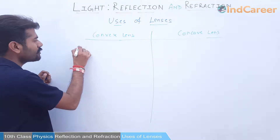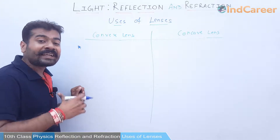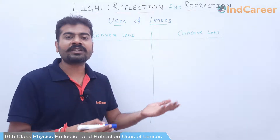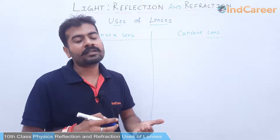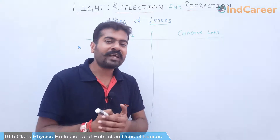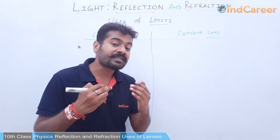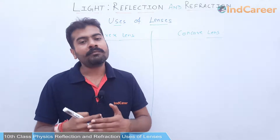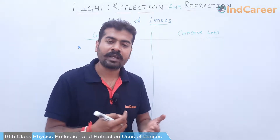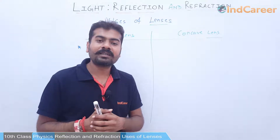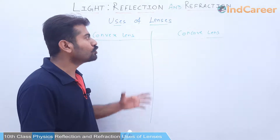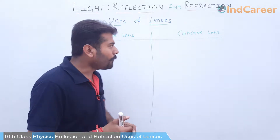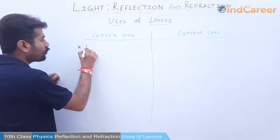The first application: convex lenses are used for eye correction — that is, sight correction. On the basis of the defects of the human eye, which we will discuss in detail in the next chapter, we use lenses to correct these defects. Convex lens हम use करते हैं for long sightedness.